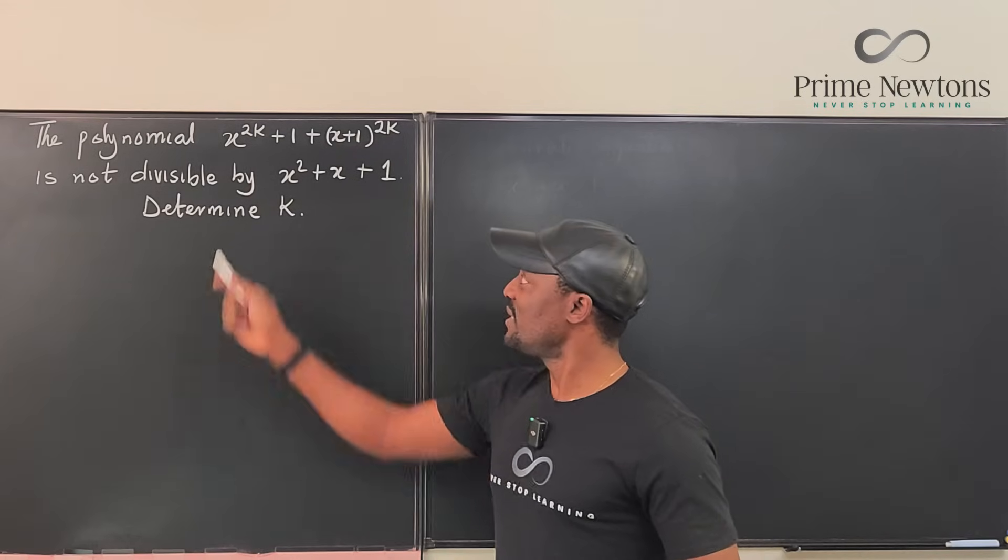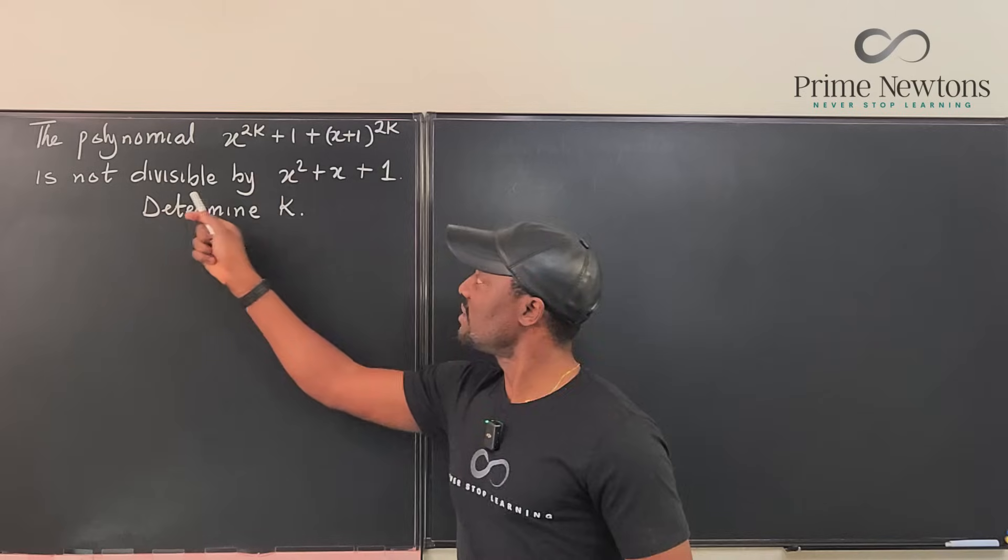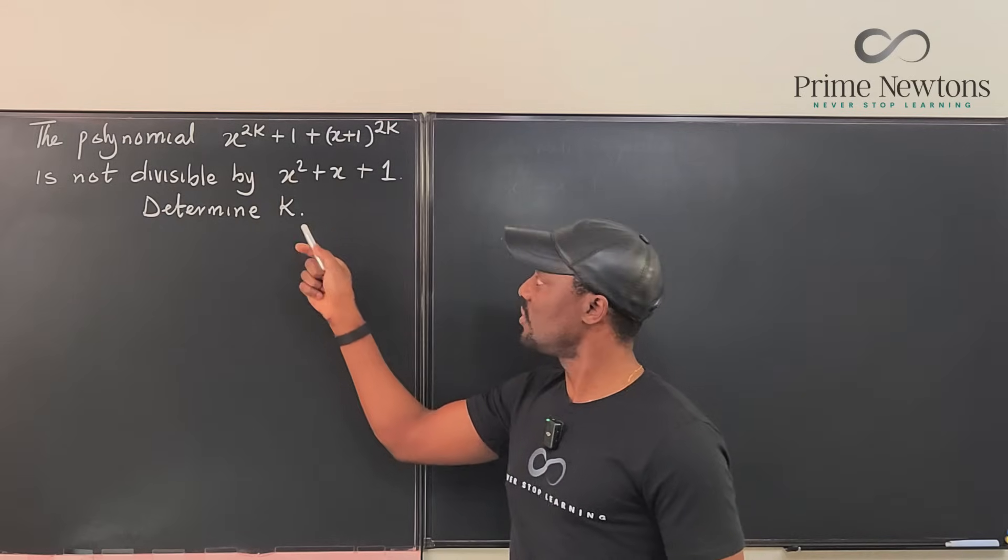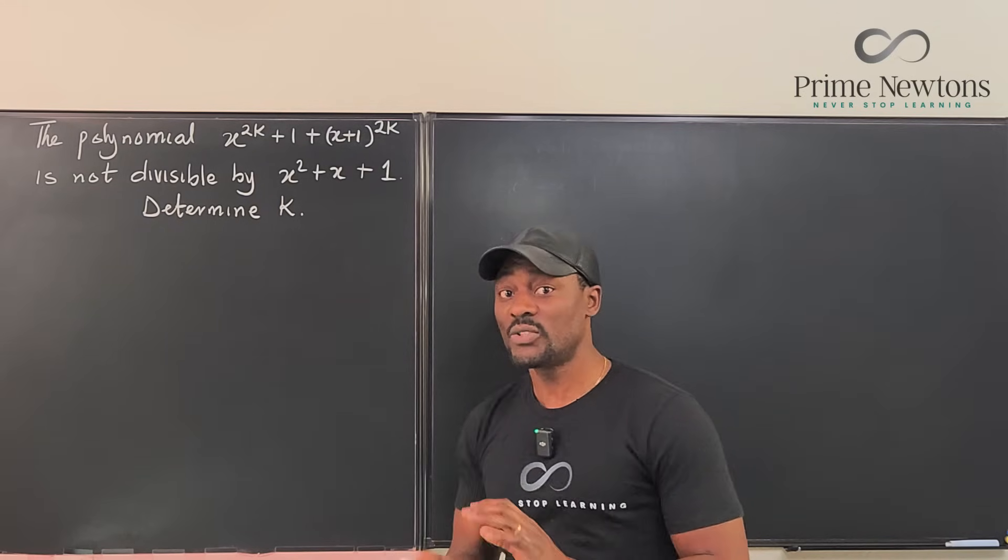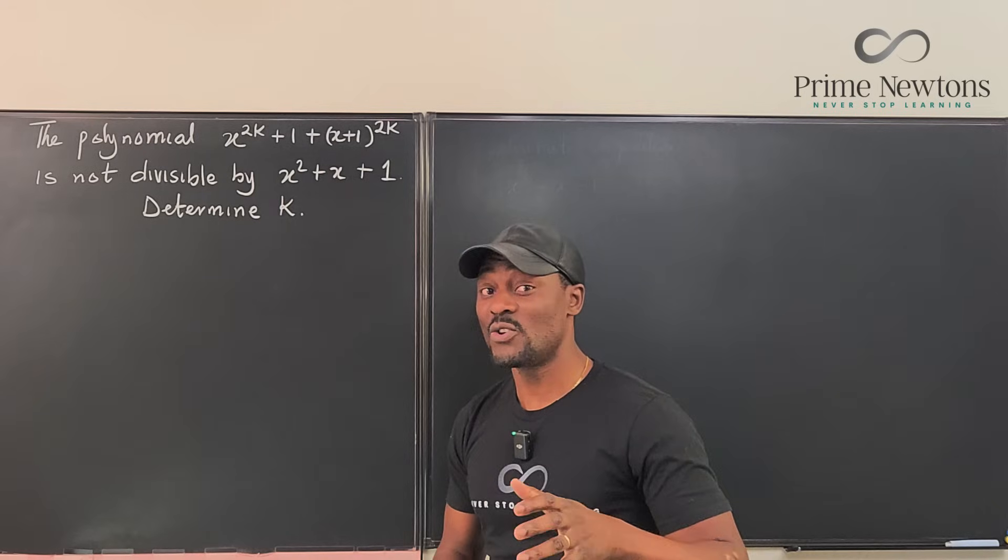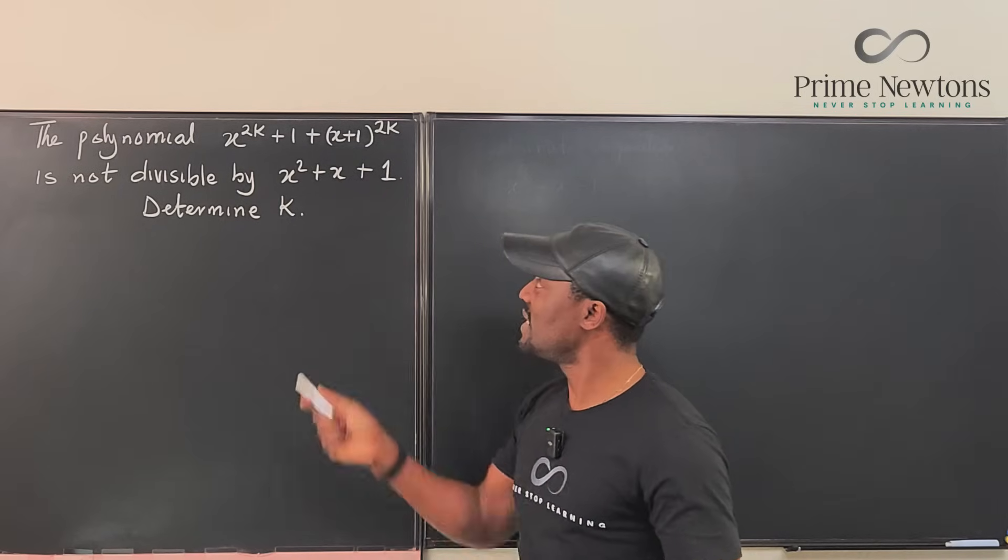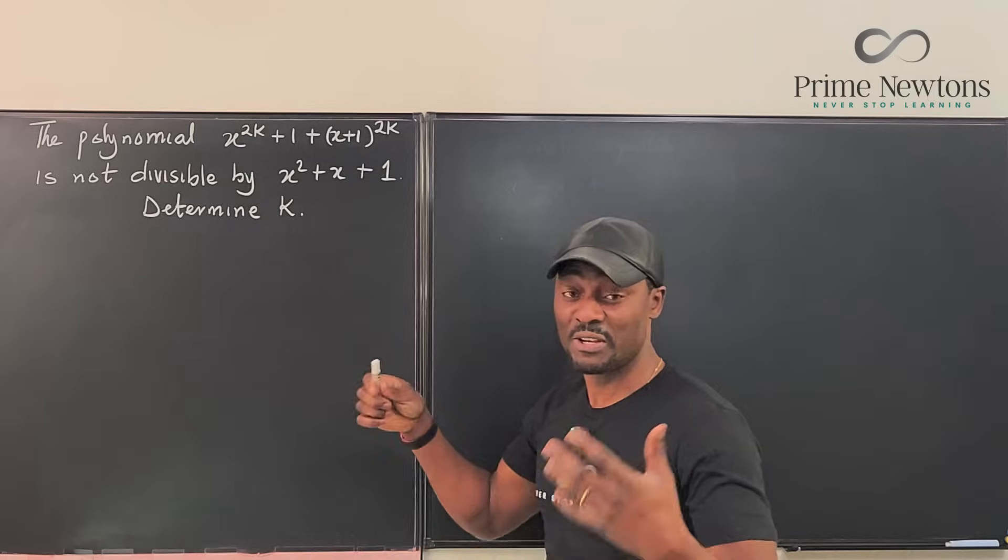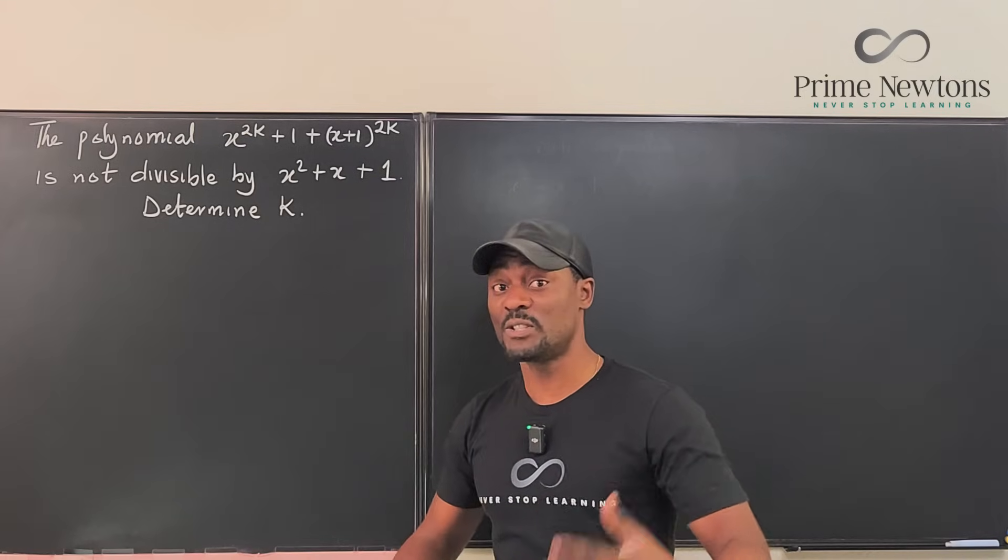It says that if this polynomial is not divisible by this polynomial, determine what k is. Now, a question like this will bank on the fact that you have some idea about these two polynomials. There must be something about them that you know, that you expected to use.